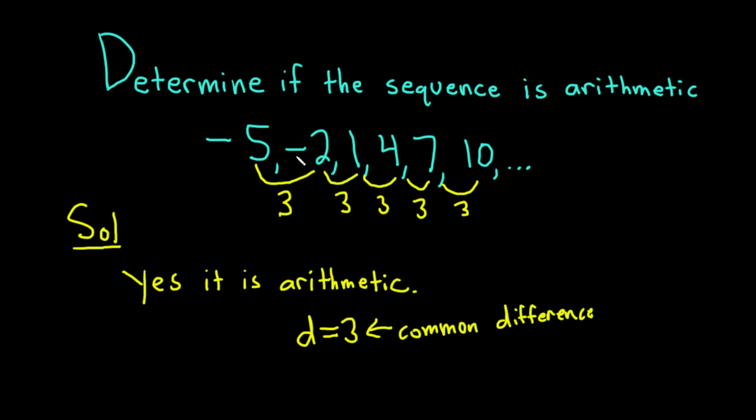For example, if I do negative 2 minus negative 5, well, the negative and a negative become a plus. So this is negative 2 plus 5, and so we get 3. Likewise, 10 minus 7 is 3. So you take any term and you subtract the previous and you get the common difference.